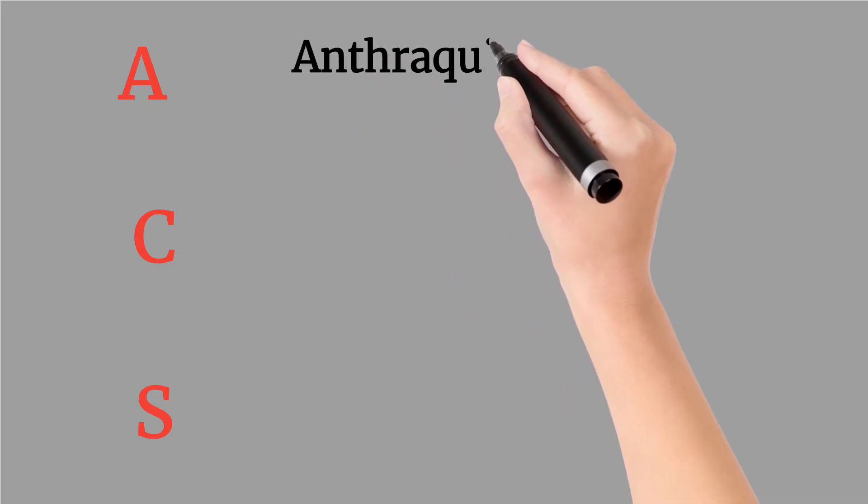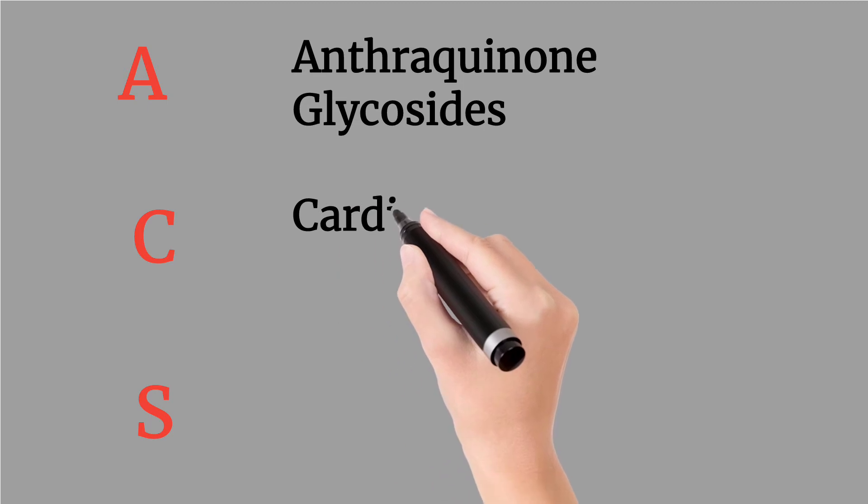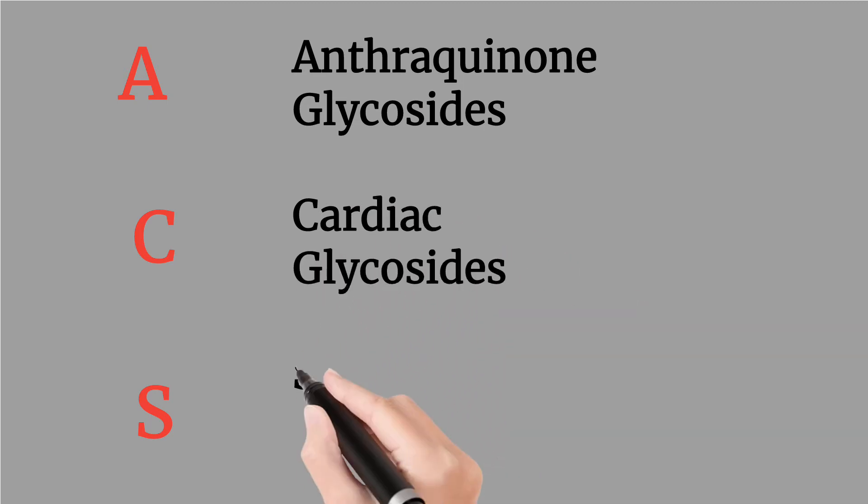A means anthroquinone glycosides, C means cardiac glycosides, and S means saponin glycosides.